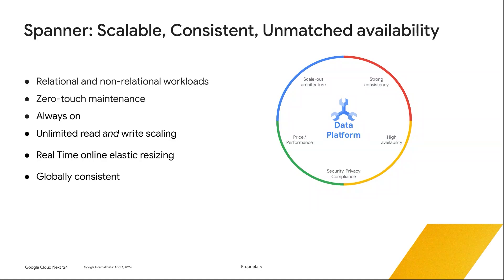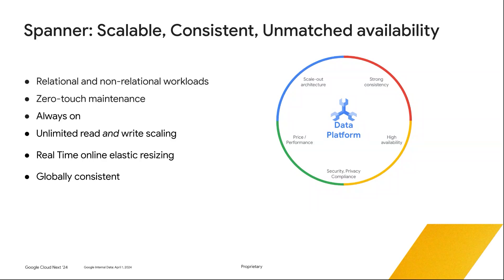Spanner offers the highest availability with zero-touch, zero-downtime maintenance as a fully managed service. It is highly scalable and supports real-time online resizing, making it ideal for small, large, or fluctuating workloads. Using technology like TrueTime, Spanner offers globally consistent access to your data no matter where you access it from. Today Spanner processes over 4 billion requests per second at peak, manages more than 15 exabytes of data, with read-write latencies below 5 milliseconds.